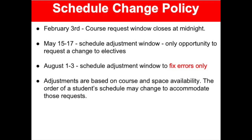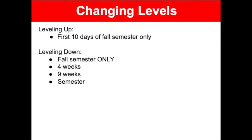Examples of errors would be if a student took speech over summer school and then saw speech in their schedule for the next school year, or if they were moved up in level of band or athletics, or if they noticed a hole in their schedule. Adjustments are based on course and space availability and the order of a student's schedule may change to accommodate those requests. Once the school year starts, students may request to level up in a course during the first 10 days of fall semester only — from on-level to advanced, or from advanced to AP. Students may also request to level down at the four-week mark, the nine-week mark, and at semester during fall semester only.